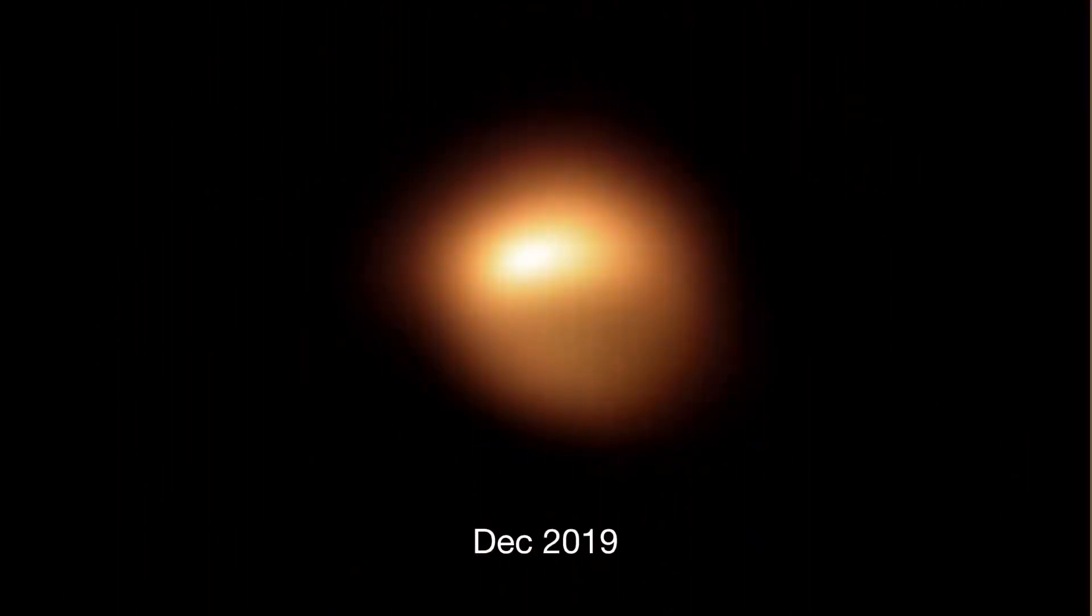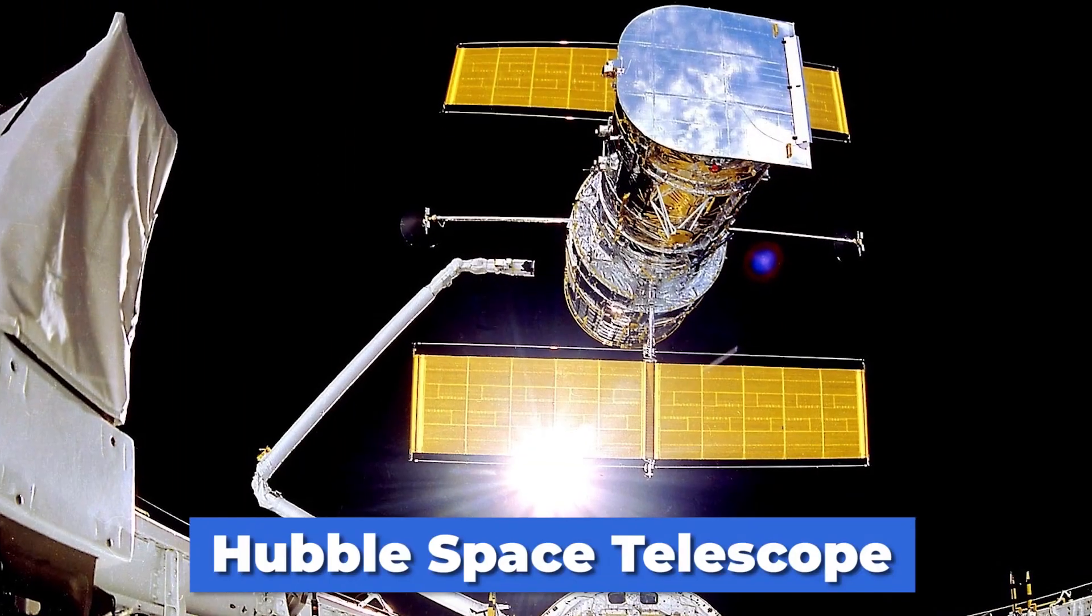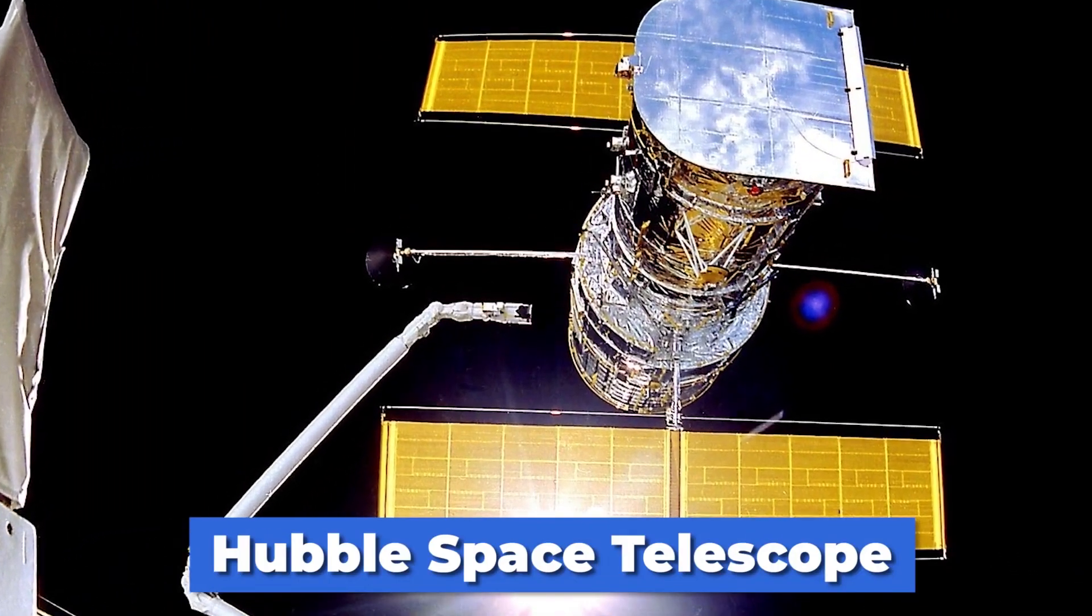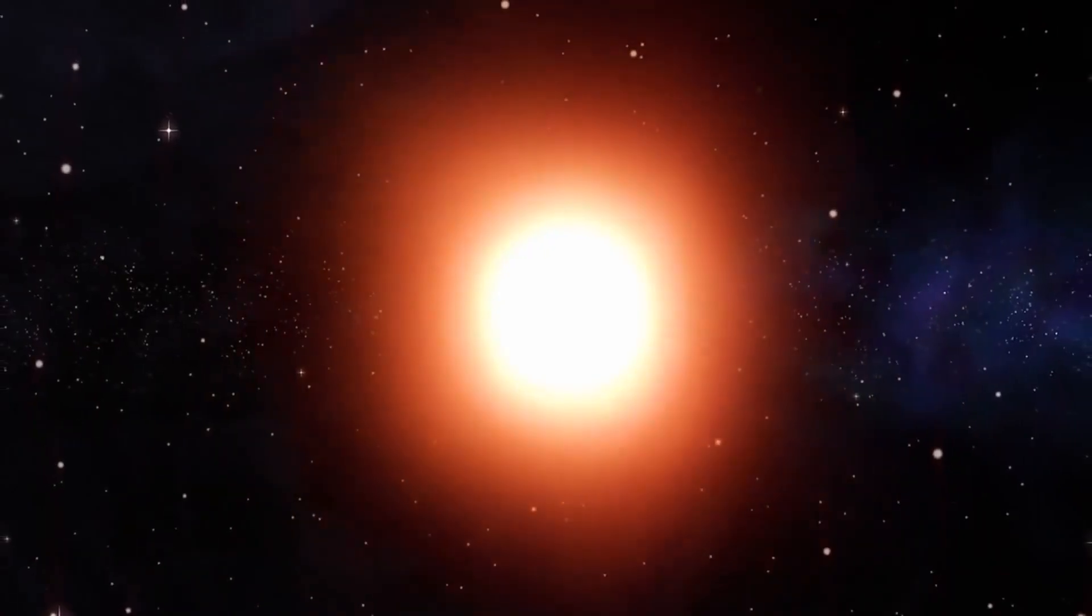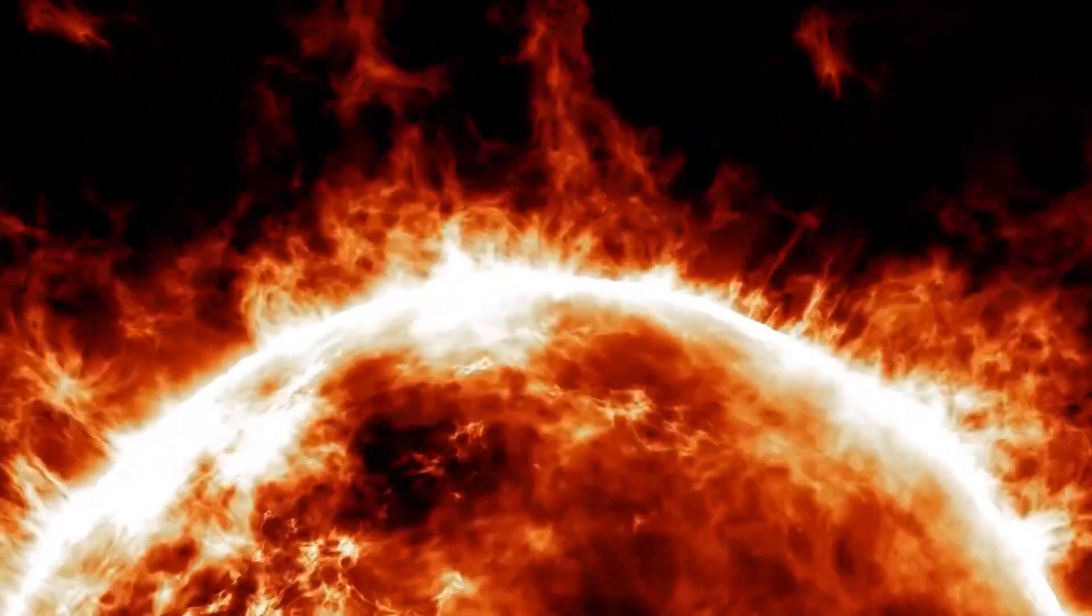Astronomers have been gathering all the data from NASA's Hubble Space Telescope and several other space observatories, and they concluded that the bright red supergiant star Betelgeuse quite literally blew its top in 2019, losing a substantial part of its visible surface and producing a gigantic surface mass ejection.